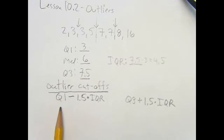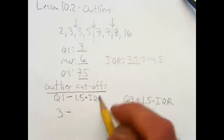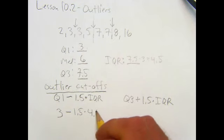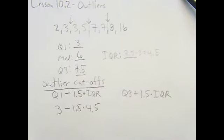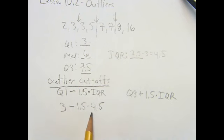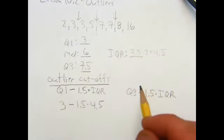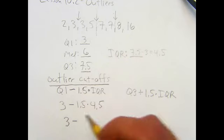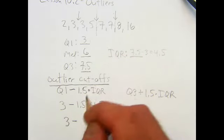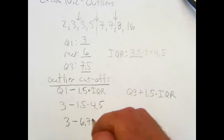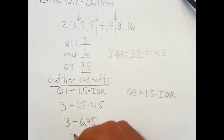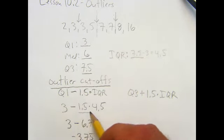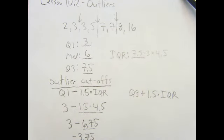All right, let's calculate that out. So Q1 was three minus 1.5 times 4.5. Do order of operations, so do your multiplying first. One and a half times four and a half I think is six and three quarters. Okay, so that's going to be negative 3.75. So make sure you do order of operations, do this first. That's the main mistake people make on this.